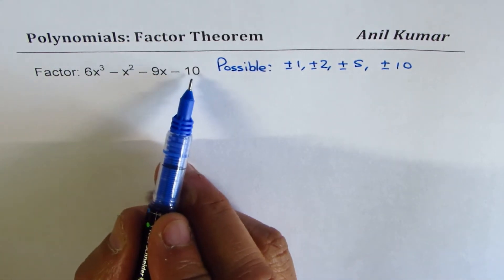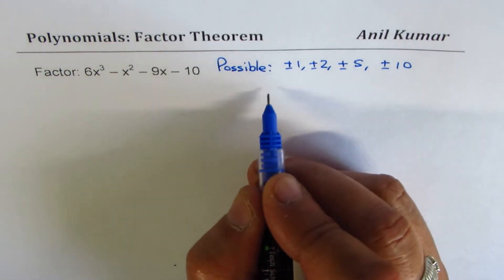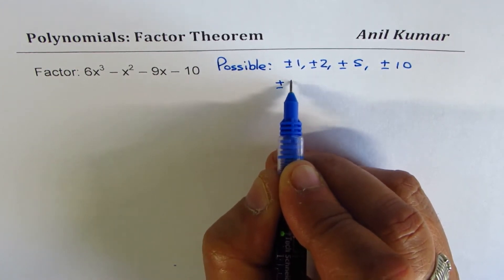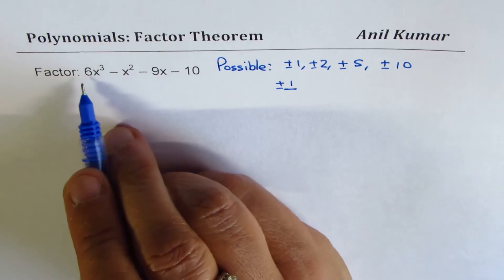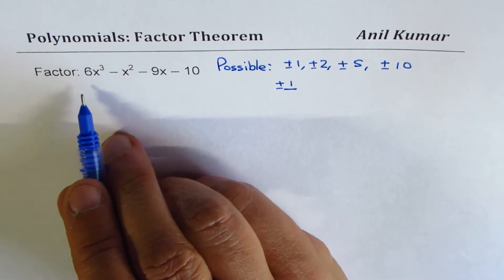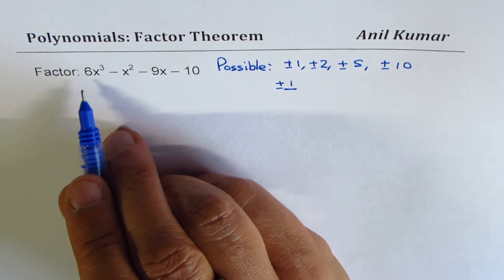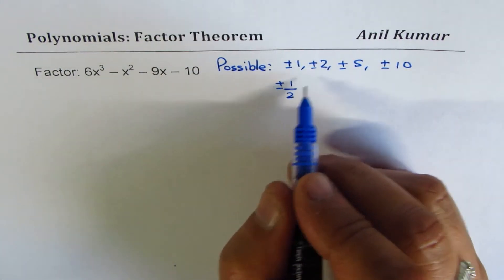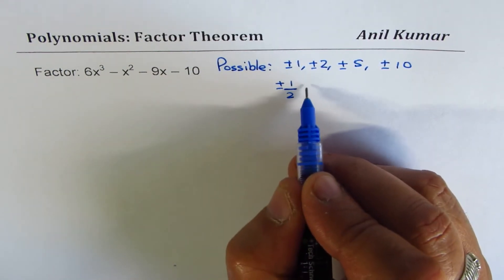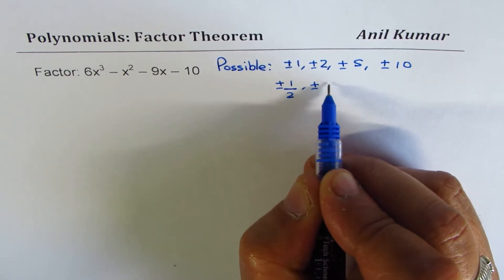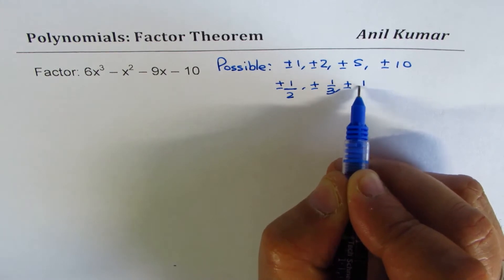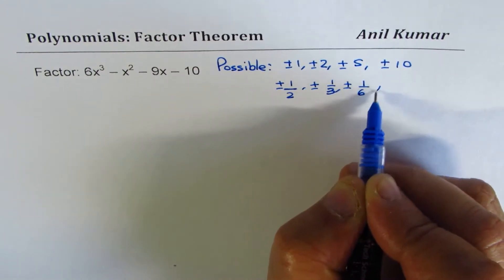Now, others are factors of 10 divided by factors of 6. So we could have the list continued as ±1/6, since 6 factors as 1, 2, 3, and 6. So we have ±1/2, ±1/3, ±1/6.